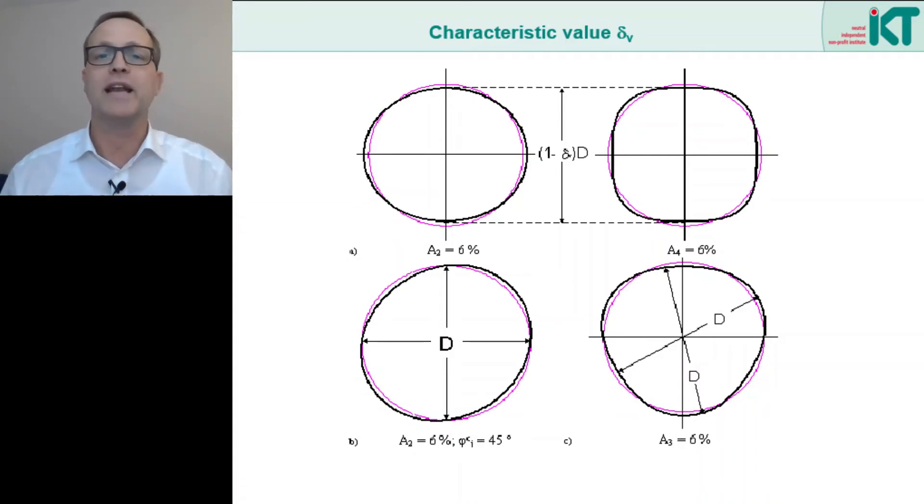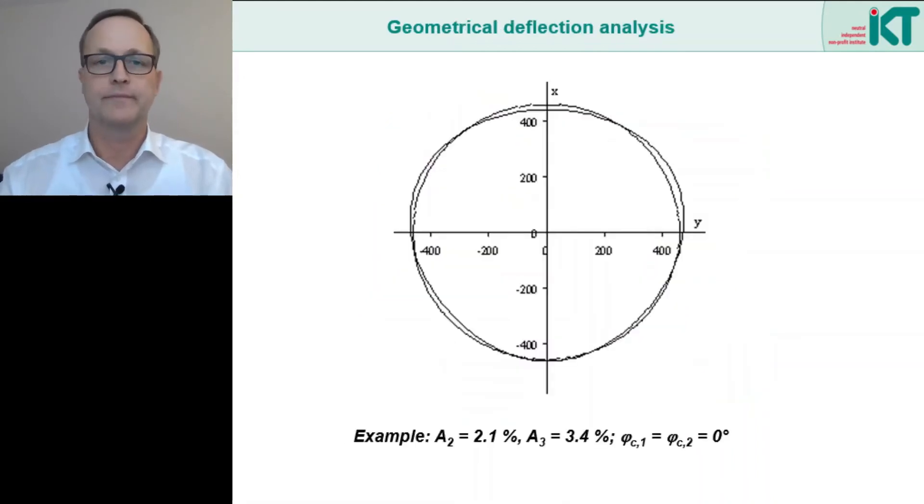In such a case, we need a laser measurement from a central fixed point in order to be able to record the radius and so the actual deformation. In practice, all these effects can then be superimposed. Here we see a slightly deformed cross-section where a two-wave elliptical deformation is superimposed with a three-wave deformation. By means of a Fourier series analysis, both parts can be determined. The maximum values are shown here: 2.1% for the elliptical portion and 3.4% for the three-wave portion. With a simple diameter measurement, we would only detect the 2.1%.